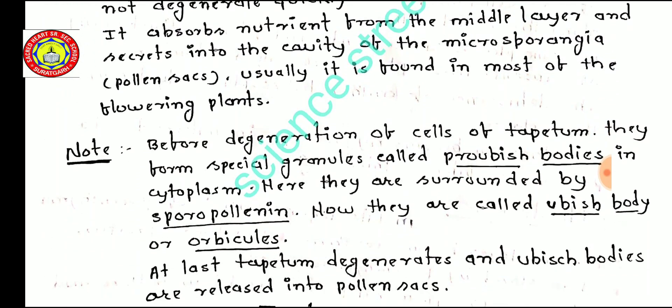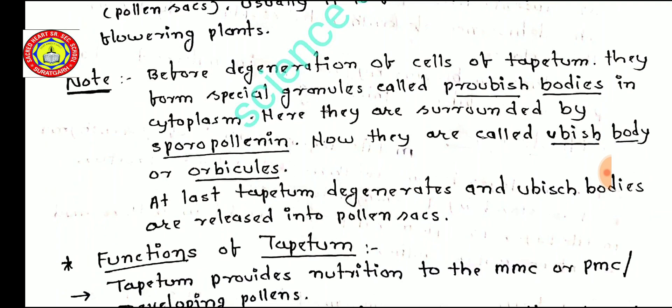One important point: before degeneration, the cells of the tapetum form special granules called pro-ubish bodies in the cytoplasm. These are surrounded by sporopollenin and are then called ubish bodies or orbicules. At last, the tapetum degenerates and ubish bodies are released into the pollen sac. Sporopollenin is the hardest organic compound in the world, and it forms the outermost layer of the pollen grain, known as the exine.